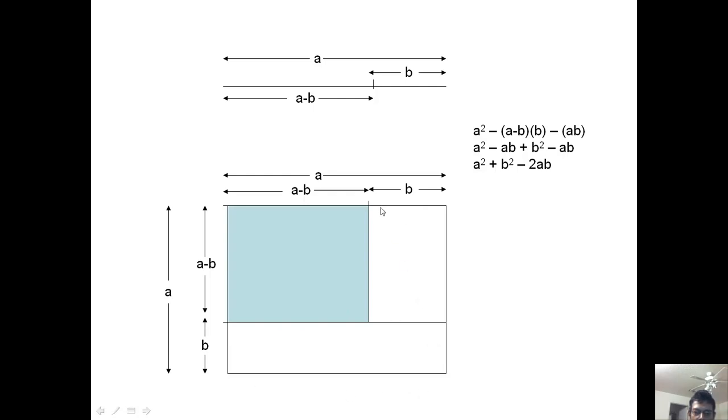So this rectangle is of area a minus b times b. So a minus b times b. And this area, the rectangle is of area a times b. So minus a b. So it is a square minus a b.